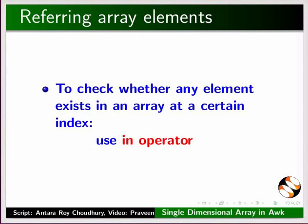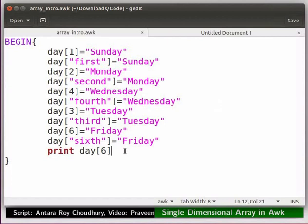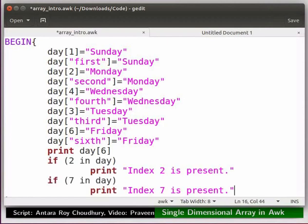Next, we will check whether any element exists in an array at a certain index. For this, we have to use the in operator. Let me explain this with an example. Switch to the code in the editor window. Place the cursor at the end of the print statement and press enter. Then type as shown. Save the code.